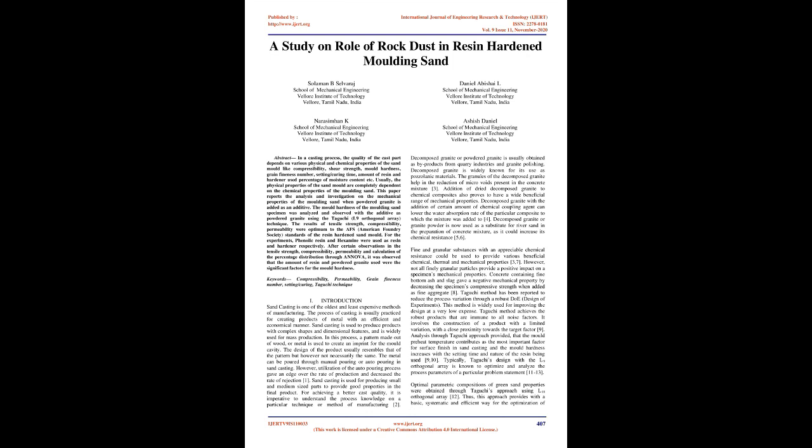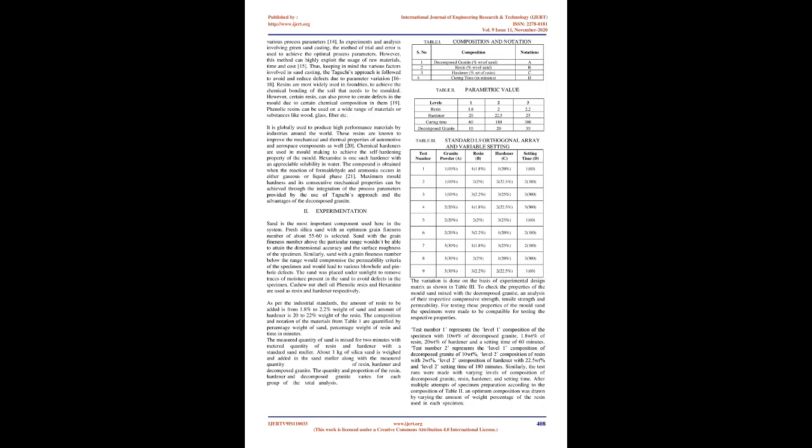The metal can be poured through manual pouring or auto-pouring in sand casting. However, utilization of the auto-pouring process gave an edge over the rate of production and decreased the rate of rejection. Sand casting is used for producing small and medium-sized parts to provide good properties in the final product. For achieving a better cast quality, it is imperative to understand the process knowledge on a particular technique or method of manufacturing.